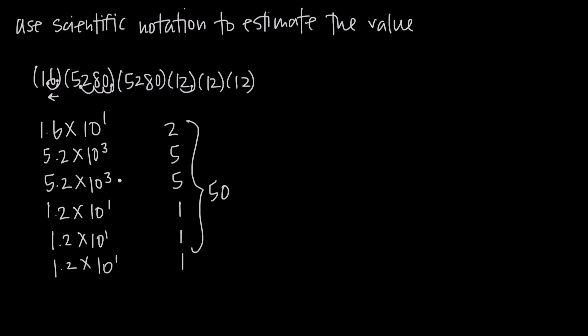So 1 plus 3 is 4. Plus 3 is 7, 8, 9, 10. So we get 10 to the 10. So 50 times 10 to the 10.